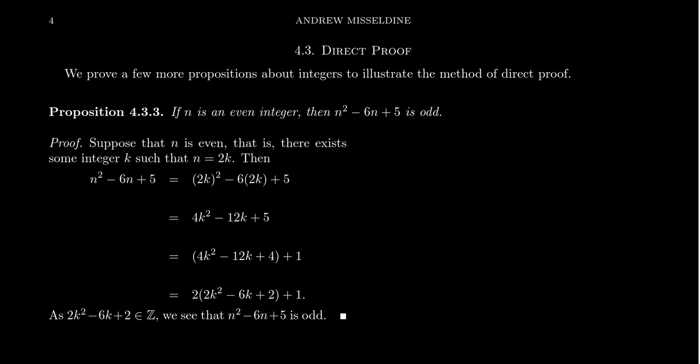Consider this proposition: if n is an even number, then n squared minus 6n plus 5 is an odd number. This is an if-then statement. So if we wanted to prove this by direct proof, we're going to assume n is an even number and then work to argue that n squared minus 6n plus 5 is an odd number.